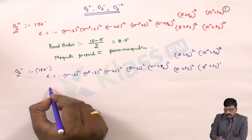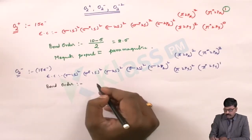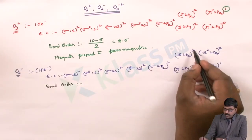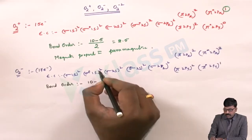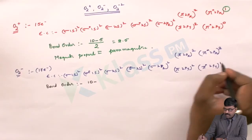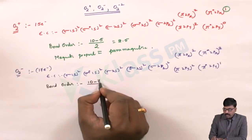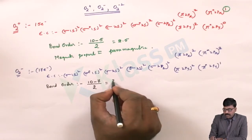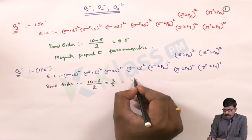For the bond order of O2 minus: counting the bonding electrons gives 10, and counting the antibonding electrons gives 7. So the bond order is (10 minus 7) divided by 2, which is 3 by 2, equal to 1.5.